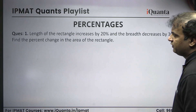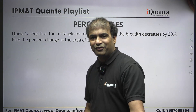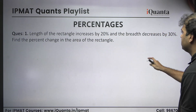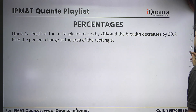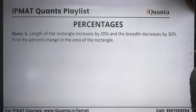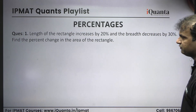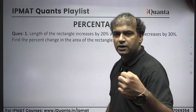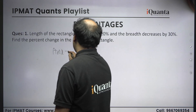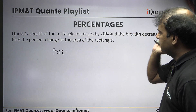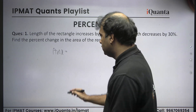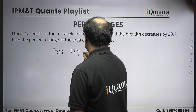Let's start with mensuration-based questions. I've taken a simple formula — area of a rectangle. The question says: length of a rectangle increases by 20 percent, breadth decreases by 30 percent. Find the percentage change in the area of the rectangle. The area formula is: area = length × breadth. A lot of people try this question in different ways, but I'll suggest you assume values.